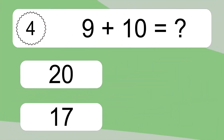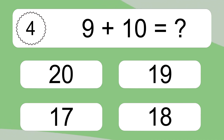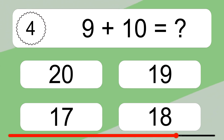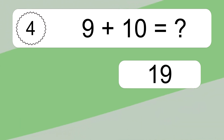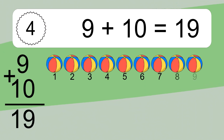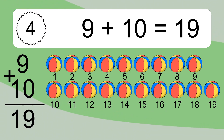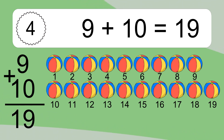9 plus 10 equals what? Let's count it: 1, 2, 3, 4, 5, 6, 7, 8, 9, 10, 11, 12, 13, 14, 15, 16, 17, 18, 19.